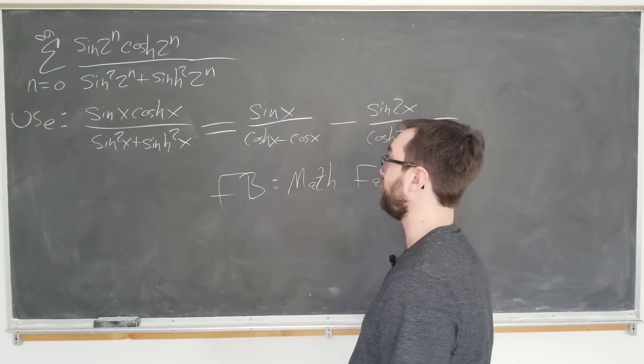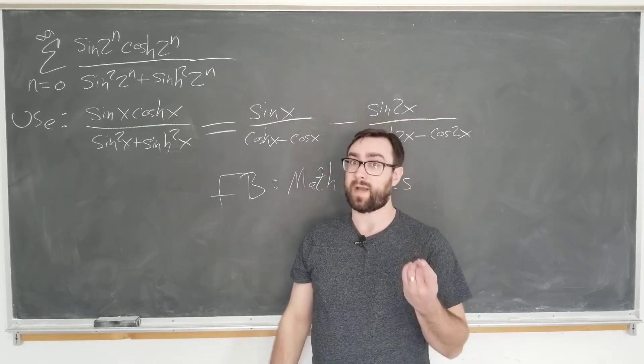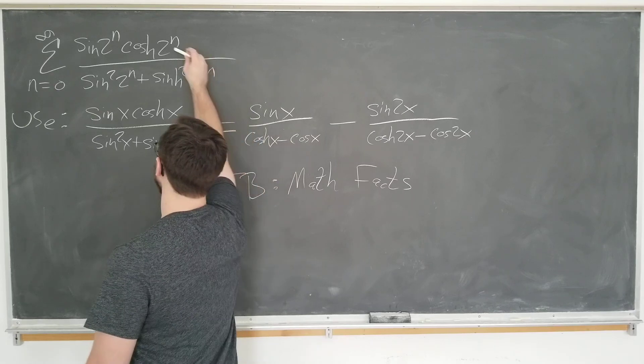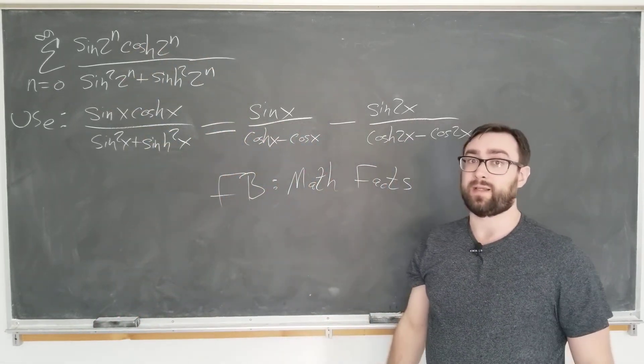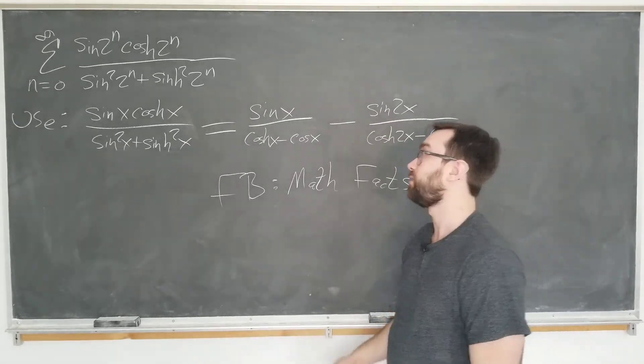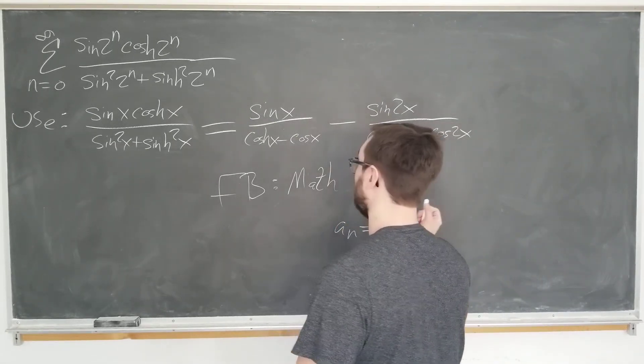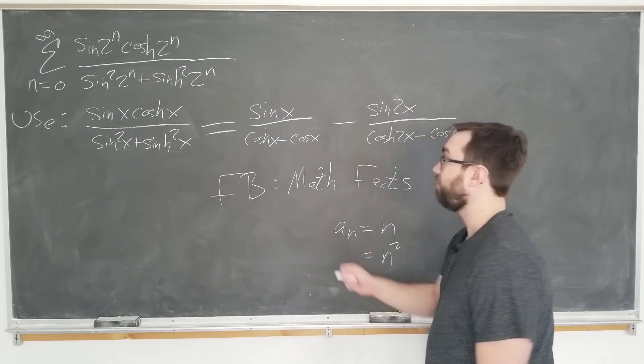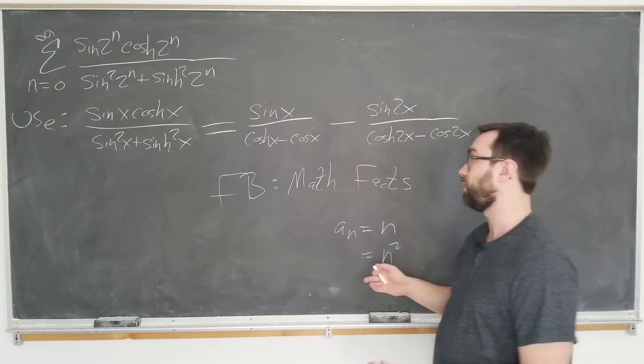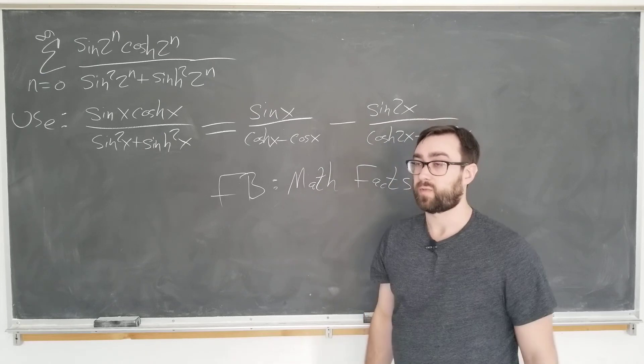And this series is unusual in a few ways. One, we have both the trigonometric and the hyperbolic functions and we also have this mysterious 2 to the n here. Why is that there? Is it that important? Would it work for other series like just the regular n or if we had n squared or something like that? What makes this 2 to the n so special? Well, we will see in the solution why it's so special.